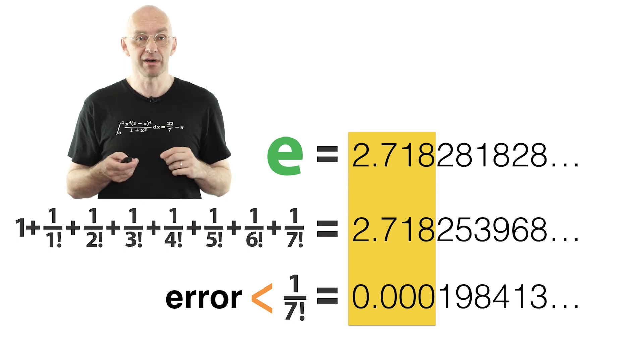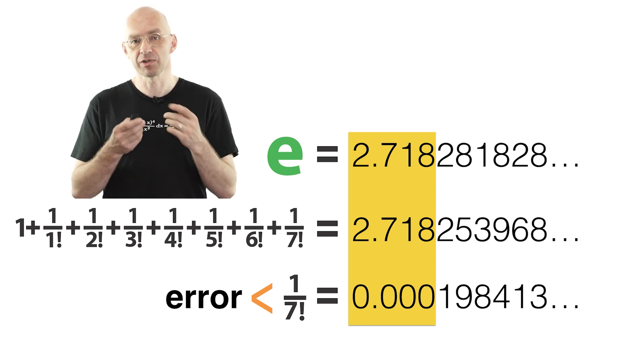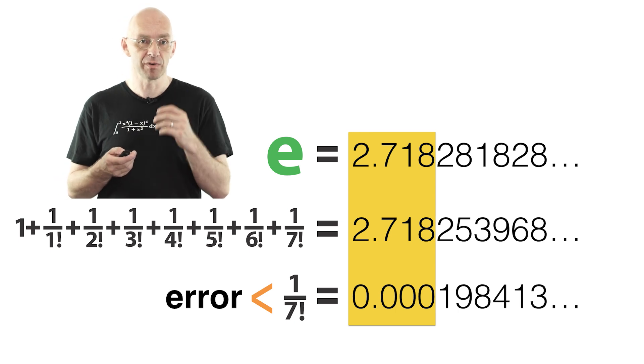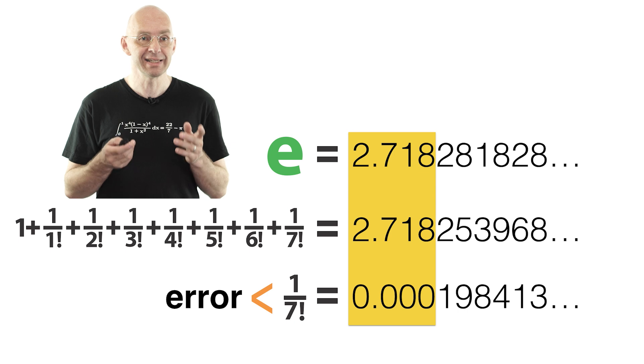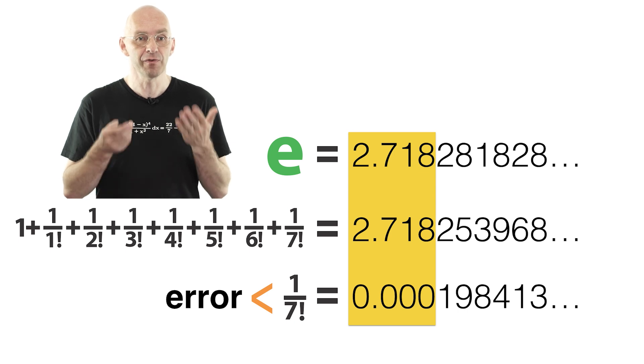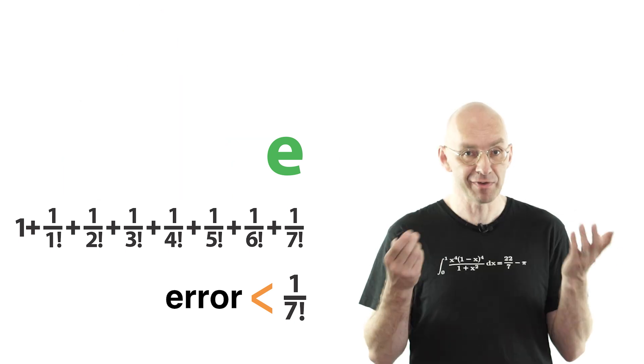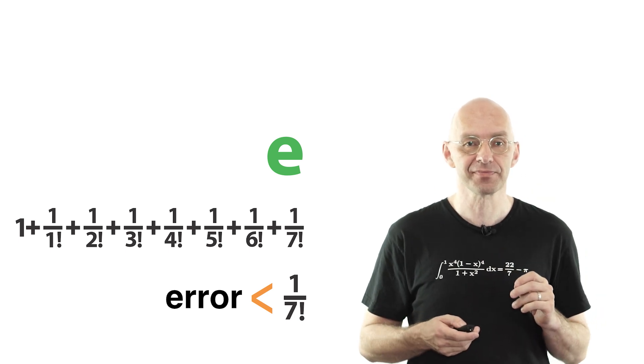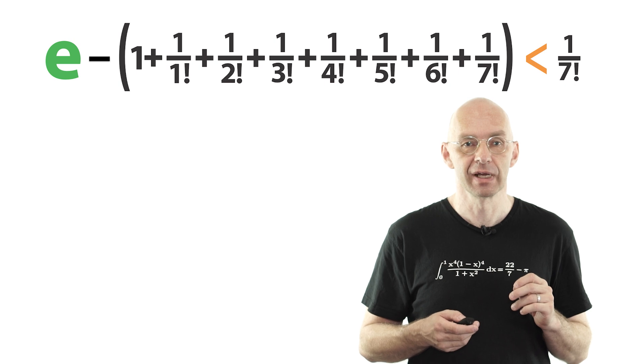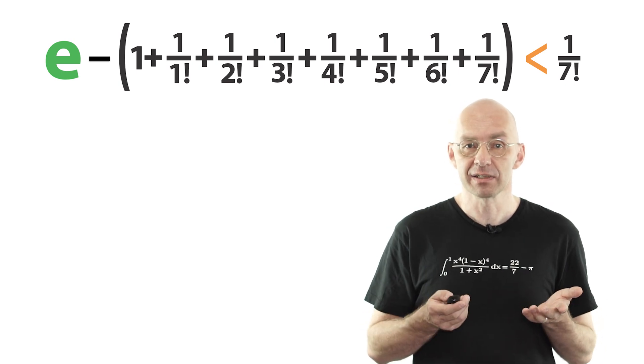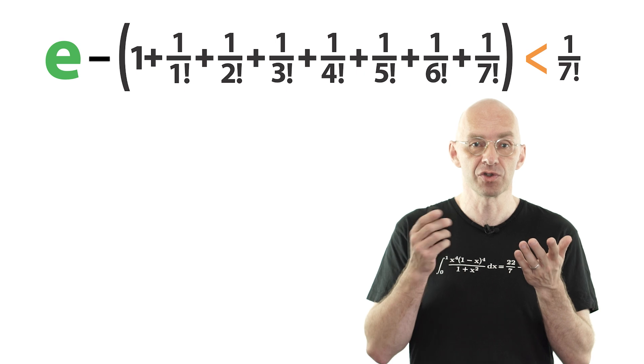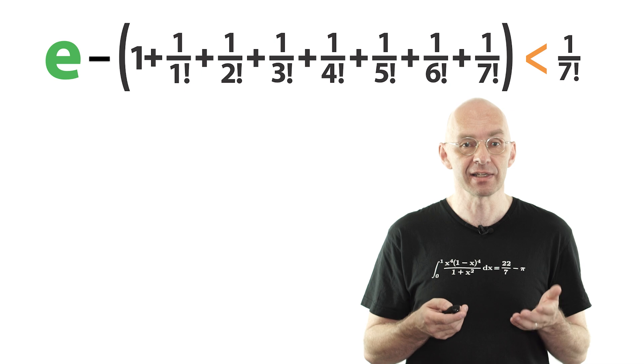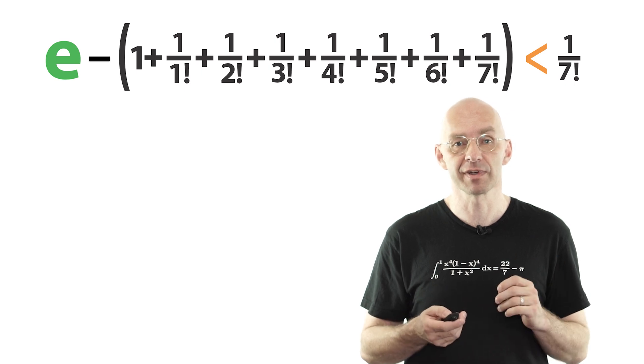Now it also turns out, and this really is very surprising I think, that this estimate for the error also gives a straightforward way to prove that e is an irrational number, that no fraction is equal to e. Are you ready for some real magic? Okay. So let's summarize what we've done so far like this. On the left side we have the difference between the true value and the approximation. That's the error, right? And we've seen that this error is less than 1 over 7 factorial.